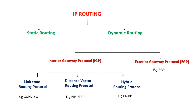Static routing is a method in which the administrator manually needs to update or add a network in all the routers, so the routers in the network learn from the administrator. The main advantage of this method is it's easy to implement, it's secure, and it doesn't have any overhead on resources such as CPU or memory. The main disadvantage of static routing is it's suitable only for a small network; when it comes to a big network, it's very complex to implement.